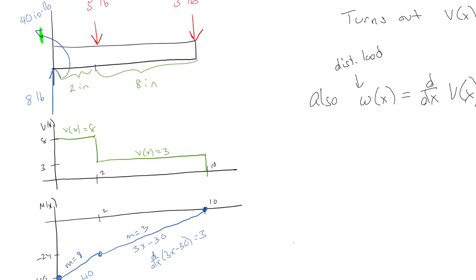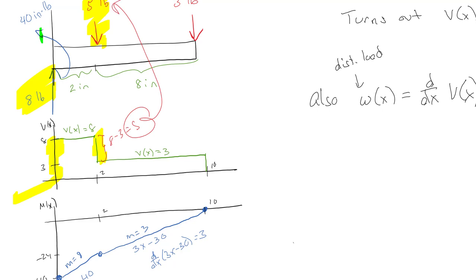Let me work through it one more time to show you the quick way — which is basically how all your professors are going to do it once they explain it once. See how this goes: 8 up, then nothing happens, then 5 down — so the distance between those shear levels is 8 minus 3 equals 5. That 5 and the 5-pound load are related. Then down another 3 to zero — that 3 and the 3-pound load are related.